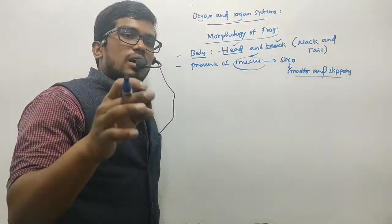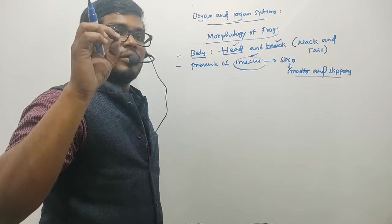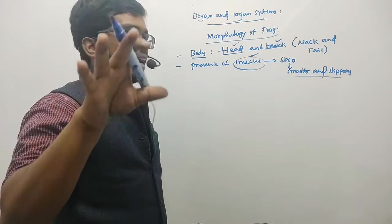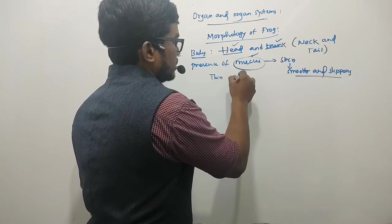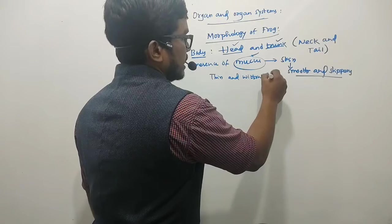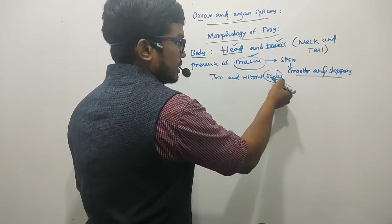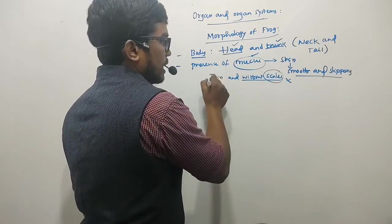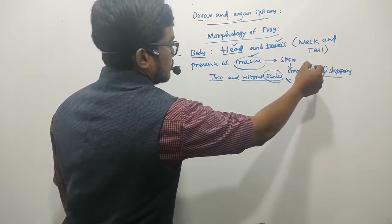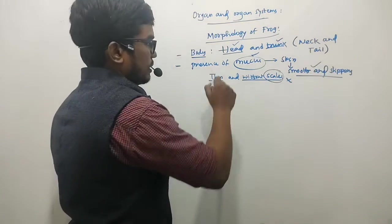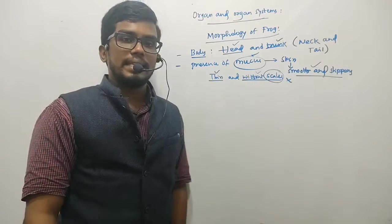The skin is always thin and without scales. Scales are hard skeletal structures which we do not find with respect to frog. So remember three points: the skin is smooth and slippery, the skin is thin, and the skin is without scales.